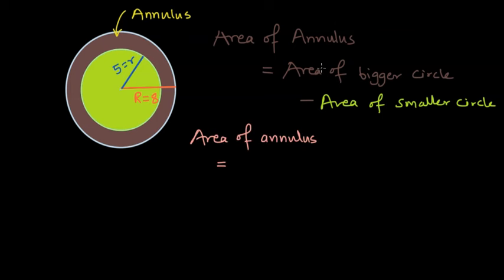So area of the annulus is equal to area of the bigger circle, which will be equal to pi times the larger radius, which is capital R square minus area of the green circle, which is a smaller circle with radius small r, which is equal to 5 centimeters. So pi times small r square.